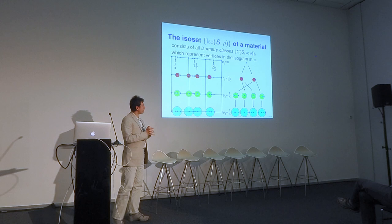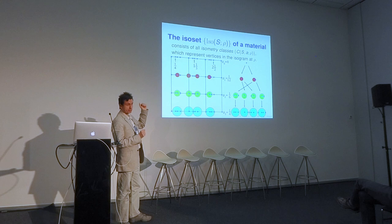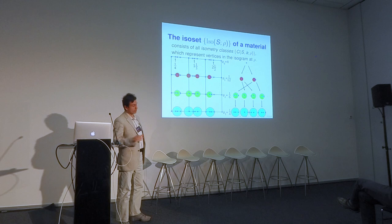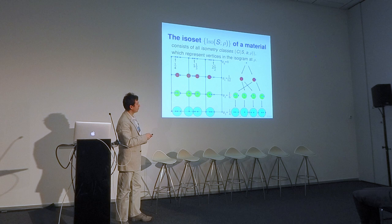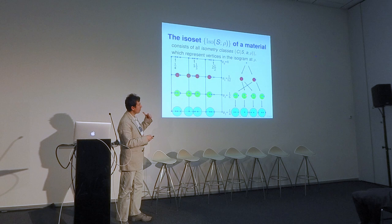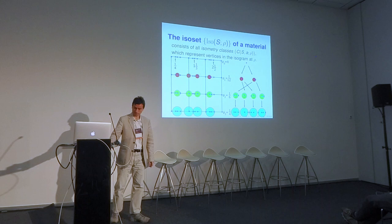Returning to the example, we now introduce the main isometry invariant for materials modeled as bonded sets: the isoset. The isoset is an abstract set consisting of isometry classes of local clusters at a stable radius ρ. For this particular crystal, the stable radius is 1.6 or any larger value, and the isoset consists of four isometric classes, represented by four different colored disks.